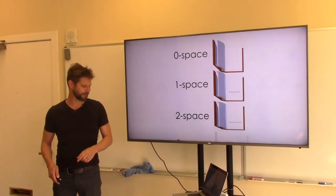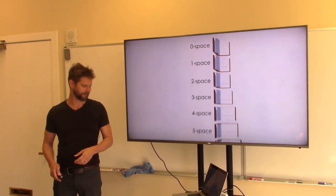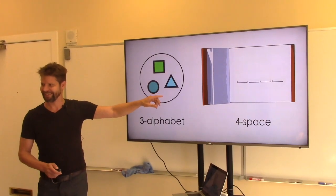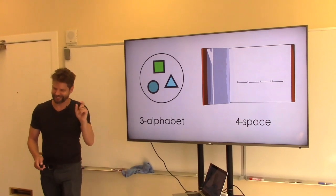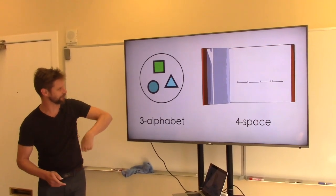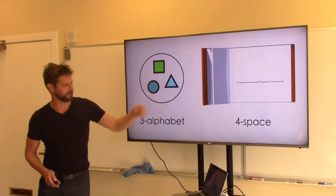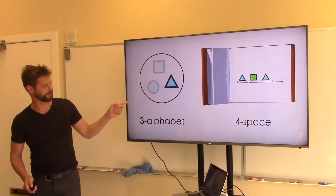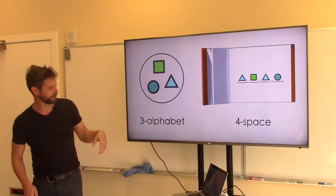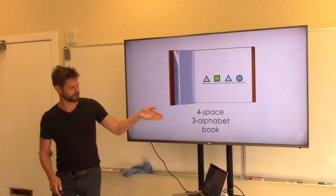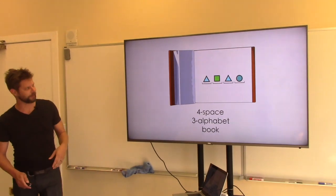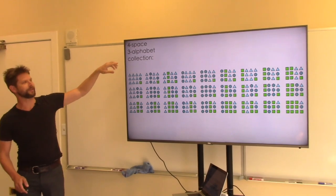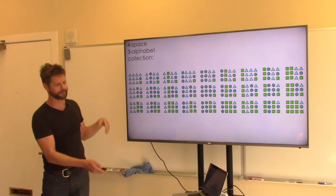If we take a four-space book and fill it using a three-letter alphabet — say triangle, square, circle — each space freely chooses one of those letters. So 'triangle, square, triangle, circle' is our book: a four-space, three-alphabet book. There are 81 different combinations you can make with this type signature. We call this a collection — the collection of all books that can be written with a four-space length and three-letter alphabet.